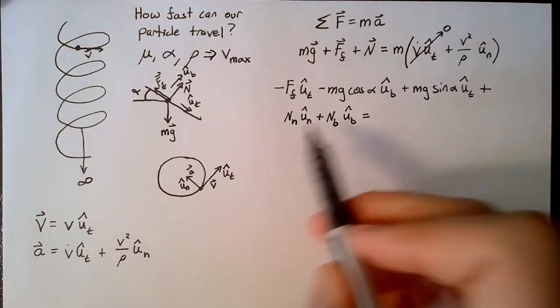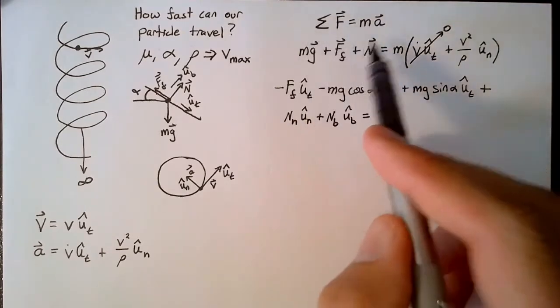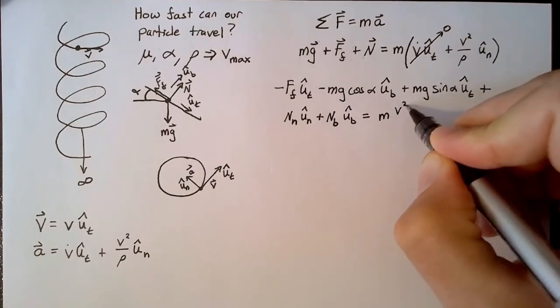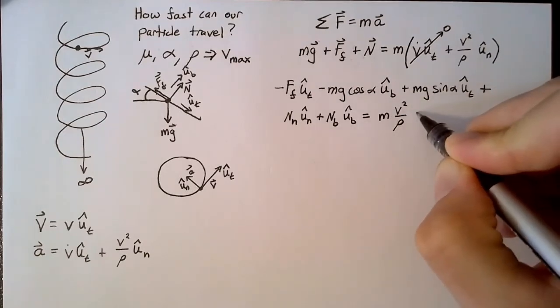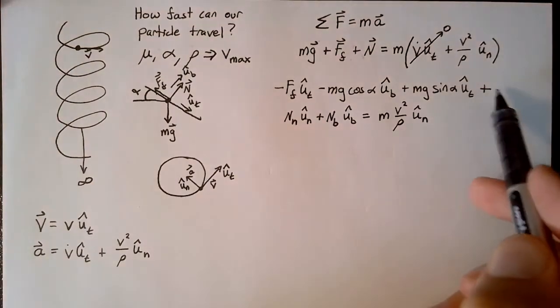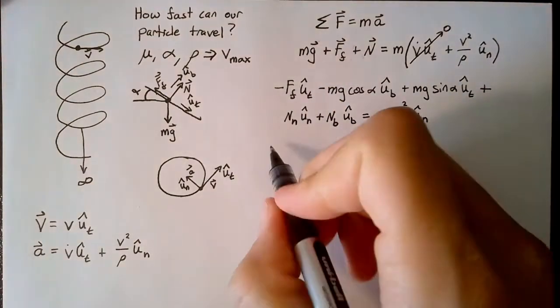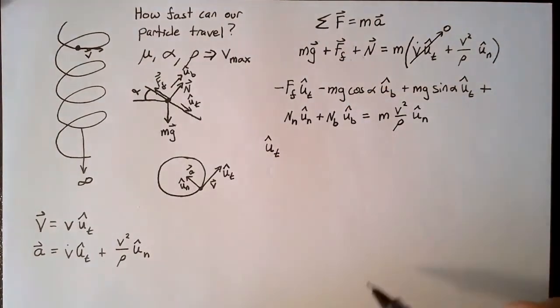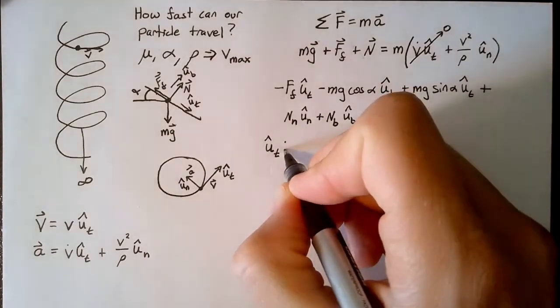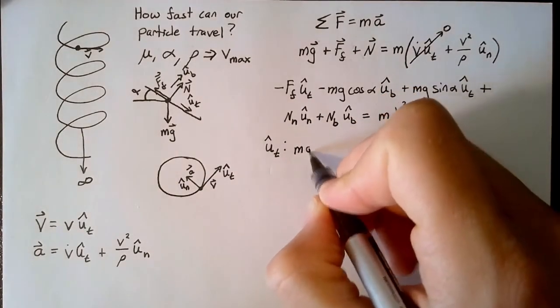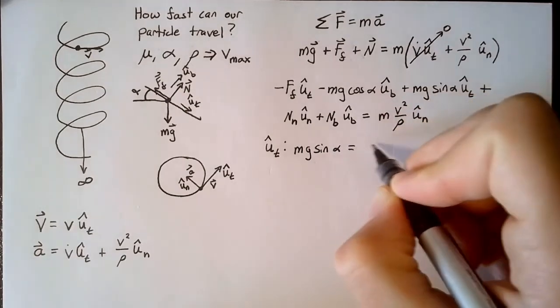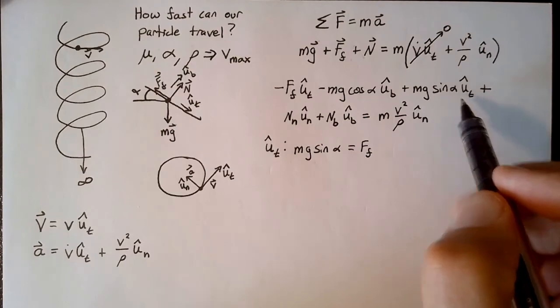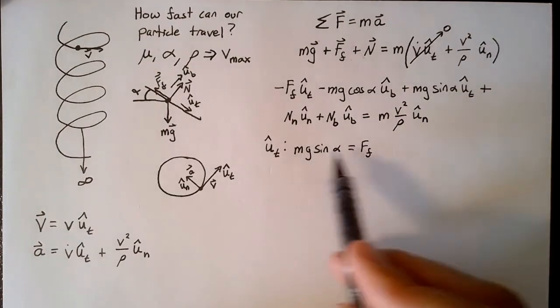Now all of this is just writing out our sum of the forces. This is equal to ma, which will be mv squared over rho times u sub n. Using this, we can write three equations. The first is going to be in the tangent direction. And we're just going to add up all of the forces in the tangent direction. So we can say that mg sine of alpha is equal to f sub f. These are two terms in the tangent direction, and there's nothing on the right hand side. So this is all there is.